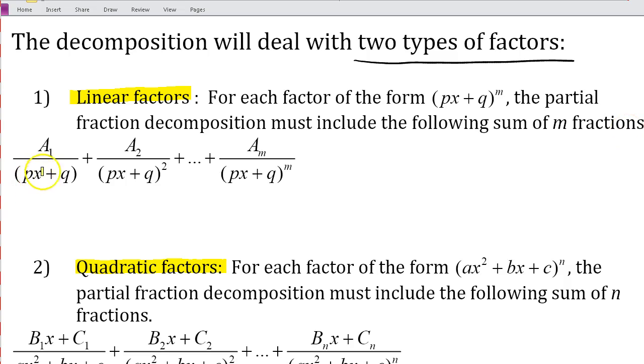So you'll notice we have this factor px plus q. This one is raised to the first, this one is raised to the second. And we would keep adding additional factors all the way up to px plus q to the m. And you notice we have a1, a2, all the way up to a m. Sometimes I'll use a, b, c, and d for these instead of just the same variable with subscripts.